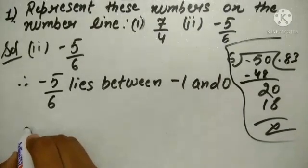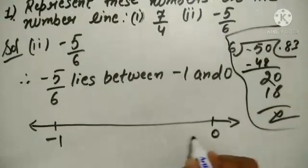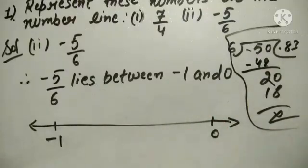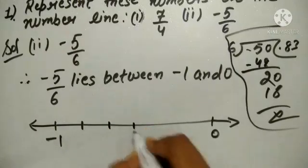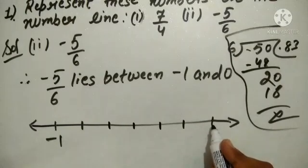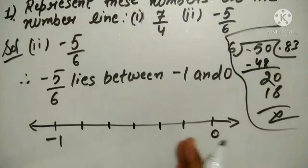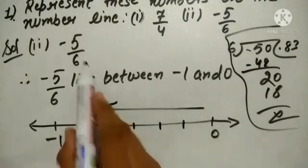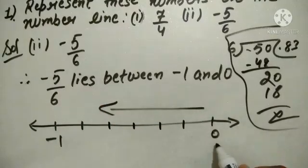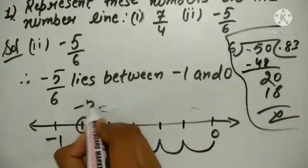To represent minus 5 over 6 on the number line, draw a number line with minus 1 on the left and 0 on the right, since negative numbers lie on the left. Since the denominator is 6, divide the distance into 6 equal parts: 1, 2, 3, 4, 5, 6. The negative numbers increase towards the left from 0. The numerator is 5, so count 5 positions from 0 going left: 1, 2, 3, 4, 5 — that is the position of minus 5 over 6.